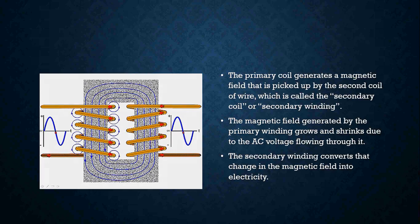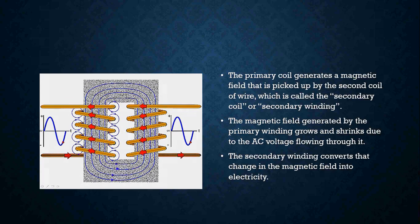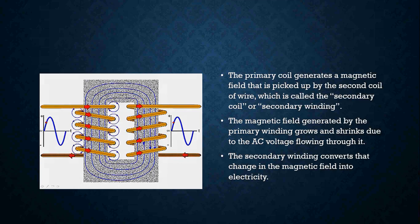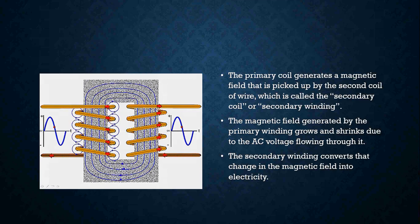The primary coil generates a magnetic field that is picked up by the secondary coil of wire, which is called our secondary coil or secondary winding. The magnetic field generated by that primary winding is going to grow and shrink. The reason it grows and shrinks is because of AC — we know that AC alternates from positive to negative 60 times in one second. So that magnetic field is going to get intense and lose intensity, going back and forth all the time.